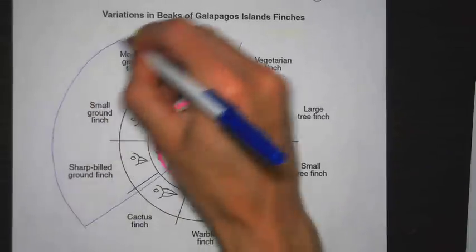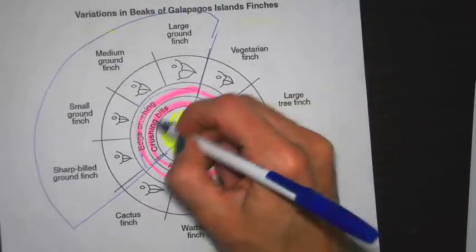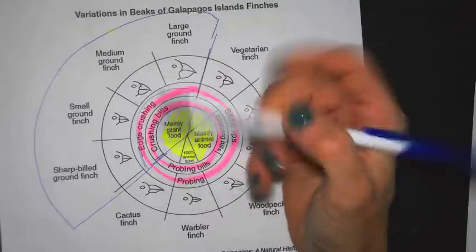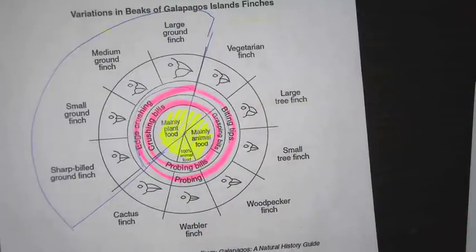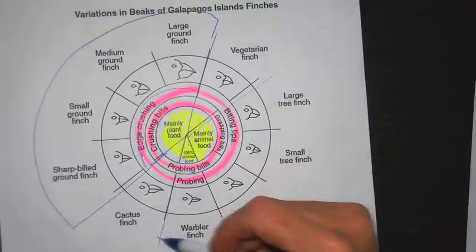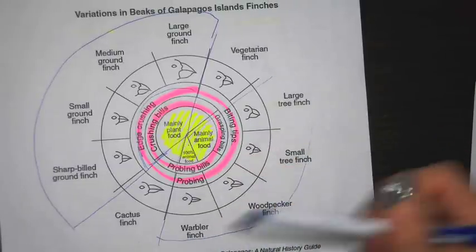For crushing, good examples would be the large, medium, or small ground finch, or the sharp-billed ground finch — these have a crushing bill. If instead a new organism came that liked to eat insects, you'd look at the animal food section, and that would be something like a large tree finch, small woodpecker finch, or warbler finch.